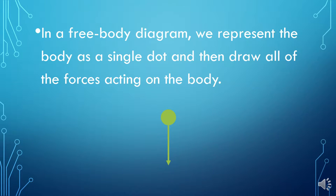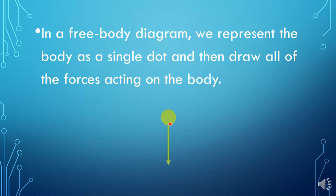When we draw a free body diagram, we represent whatever object we're drawing as a dot. It doesn't matter if that's a boat, a car, a mountain, an airplane, a person, a television, a kite — whatever. It gets represented as a dot because all of the forces act like they're being applied right to the center of mass or the middle of that body. The center of mass isn't technically the middle, but it's a good enough explanation for now. So we make our dot and then we draw every force that's acting on the body.